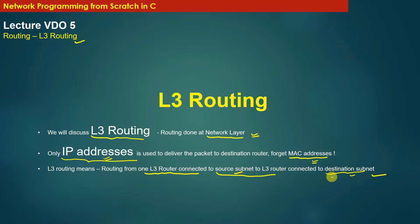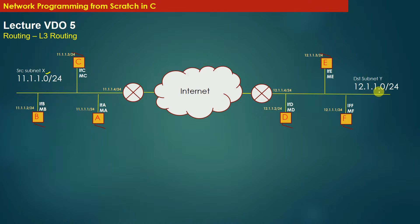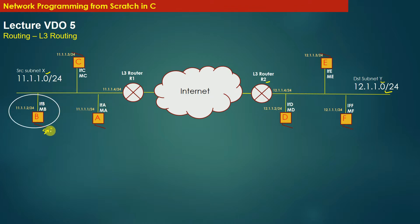Here is a simple topology. On the left hand side we have source subnet X with network ID 11.1.1.0/24. On the right hand side we have destination subnet Y with network ID 12.1.1.0/24. Every subnet is gated by an L3 router — R1 is the gateway router for subnet X, and R2 is the gateway router for subnet Y. Machine B is the source machine and machine F is the destination machine, present in subnet Y.